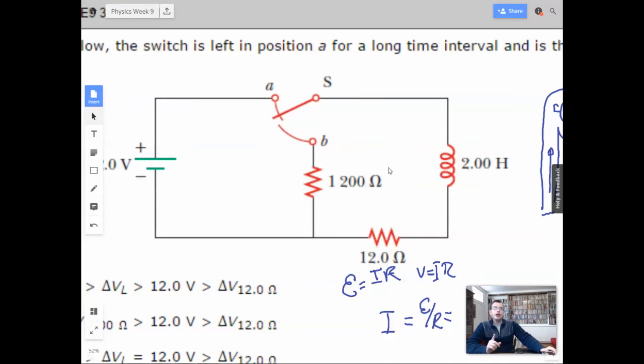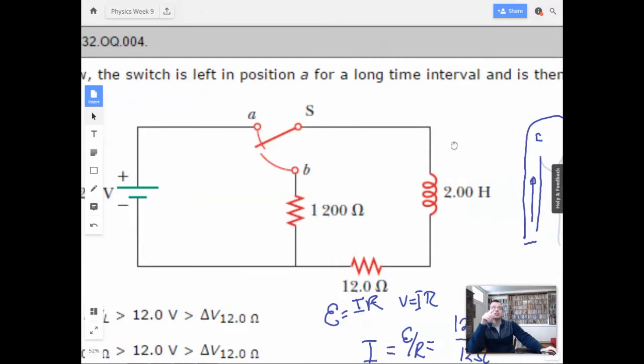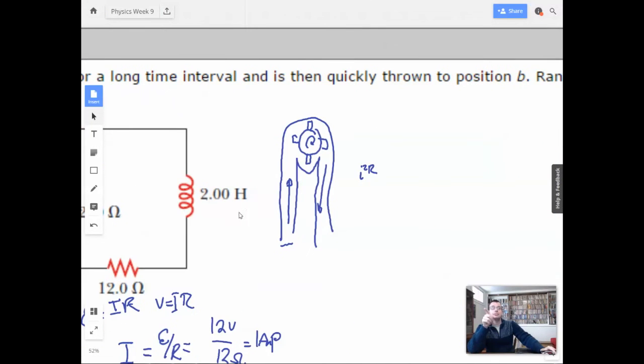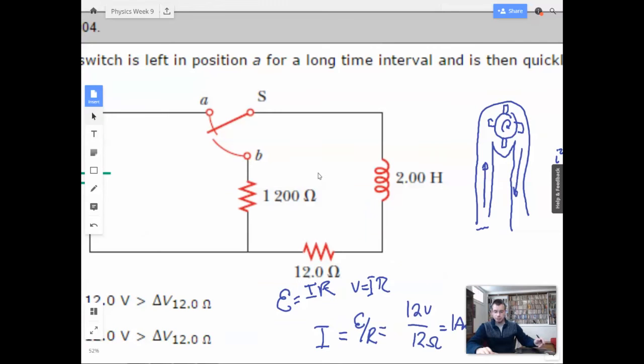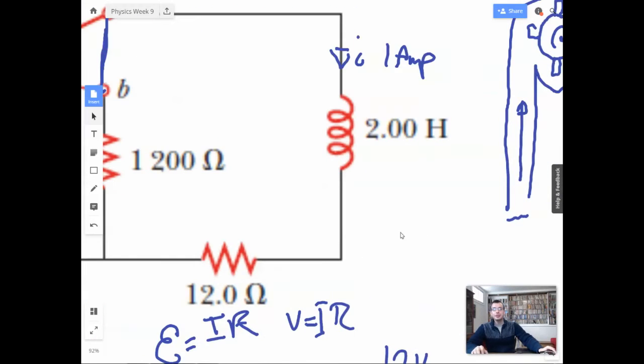So we have an initial current of 1 amp. Switch is left in position, and then quickly thrown into position B. So we go to position B. We initially had 1 amp going down here. As soon as the position is thrown, that water wheel is going to keep moving. So that's going to be 1 amp coming out of here even after the switch is thrown.